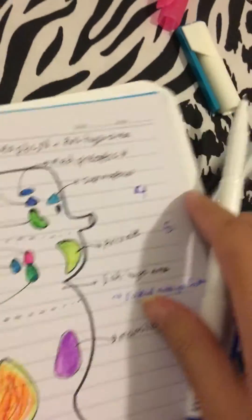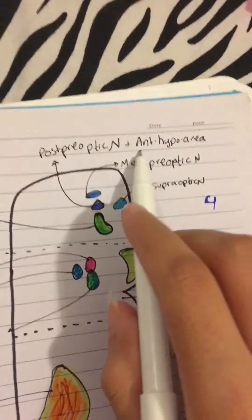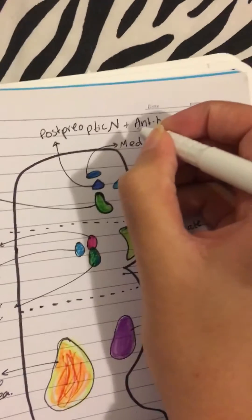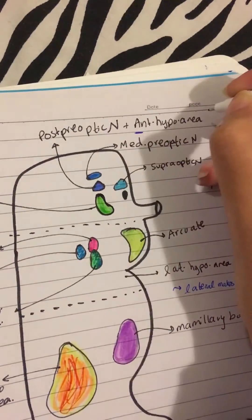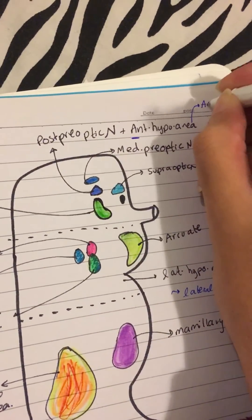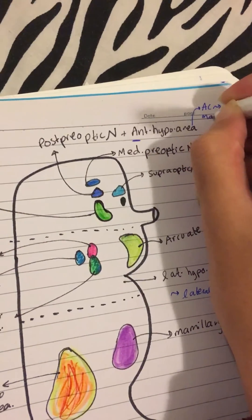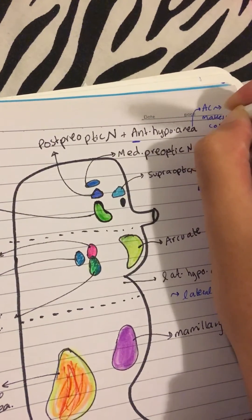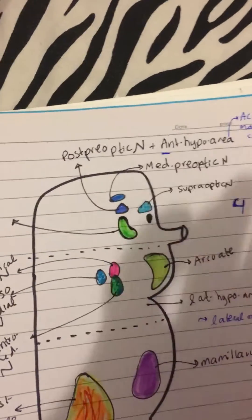And another thing, your anterior hypothalamic area, this guy right here, you have a little trick here, AC makes you cool.